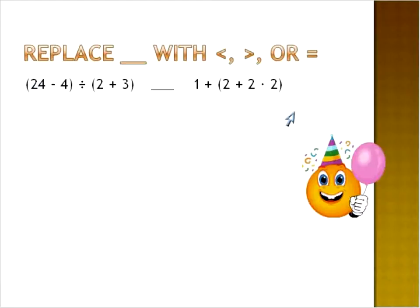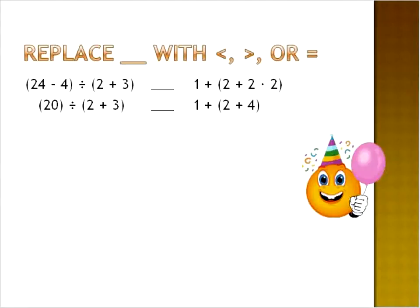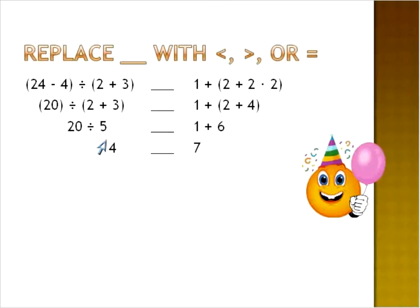Now we have more complicated expressions. On the left, we solve what's inside the parentheses first, then do the division at the end. On the right, using order of operations, we first multiply two times two, which is four. Twenty-four minus four is twenty. Then two plus three is five, and two plus four is six. Twenty divided by five gives a final solution of four on the left side, and one plus six is seven on the right. Our final answers are four and seven, and the symbol we use is that four is less than seven.